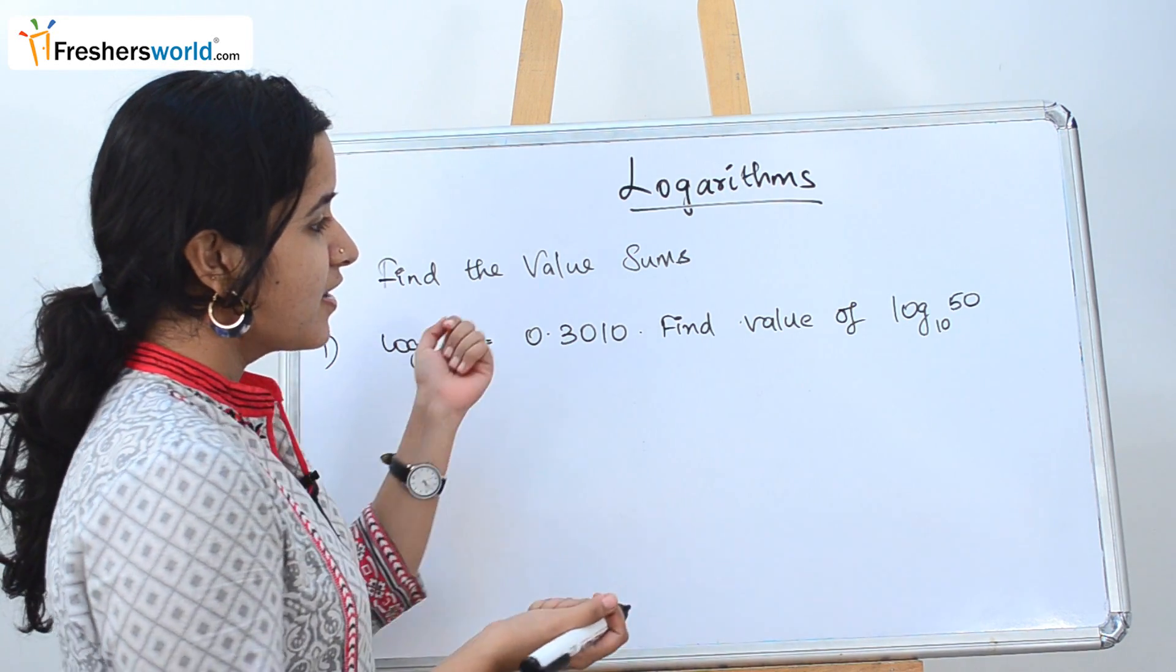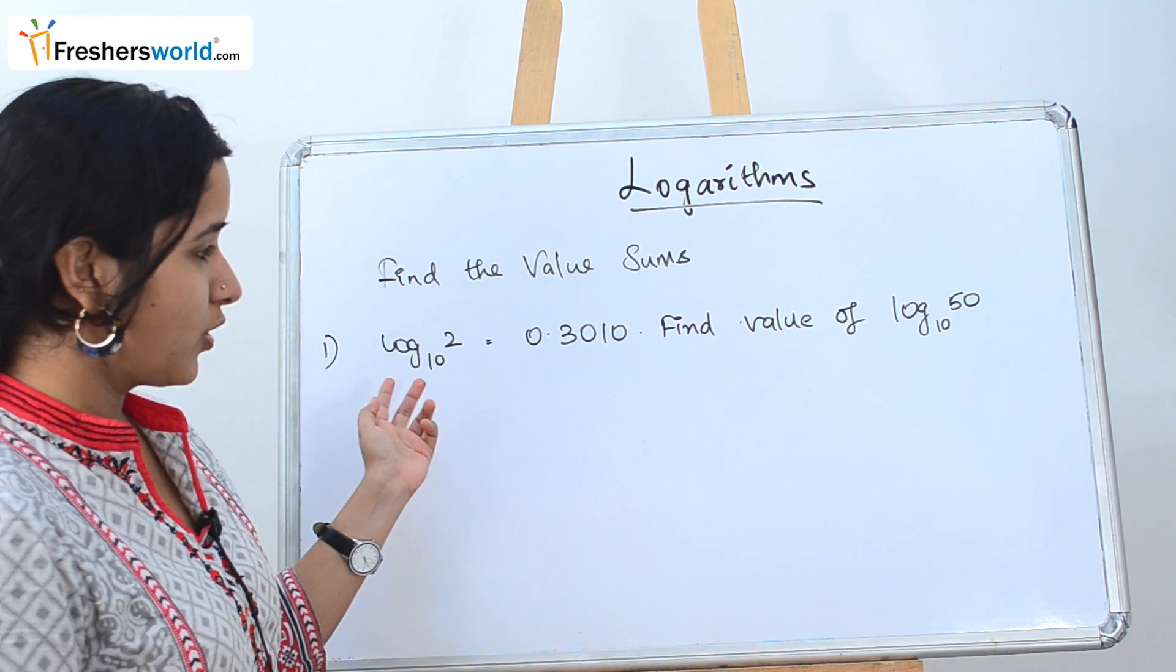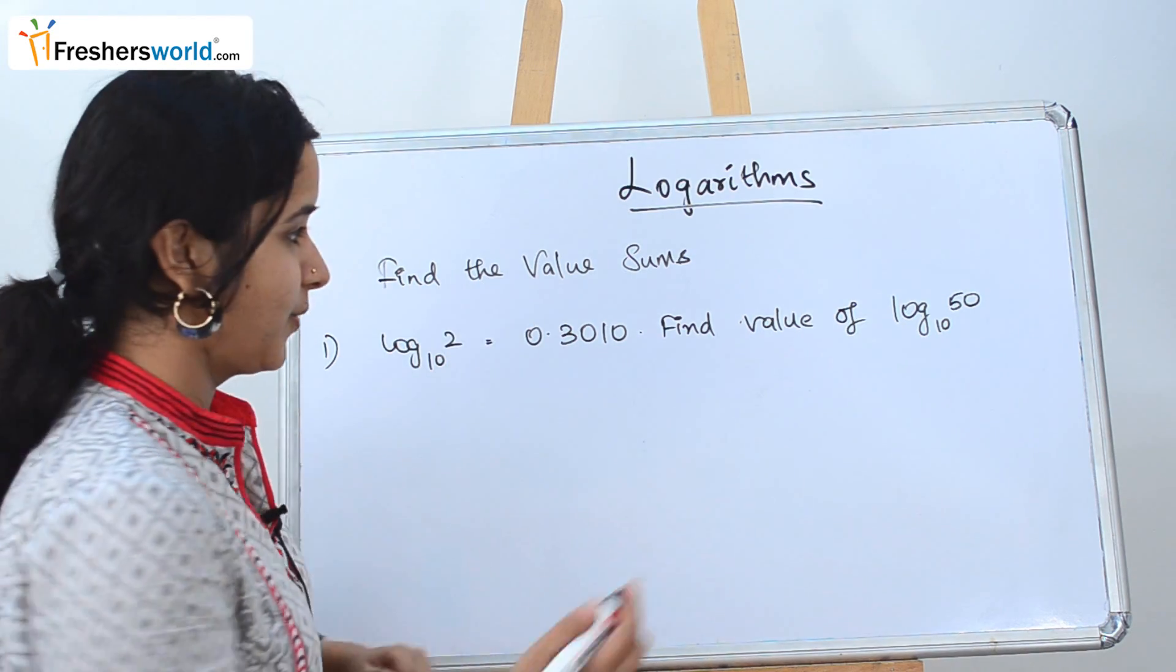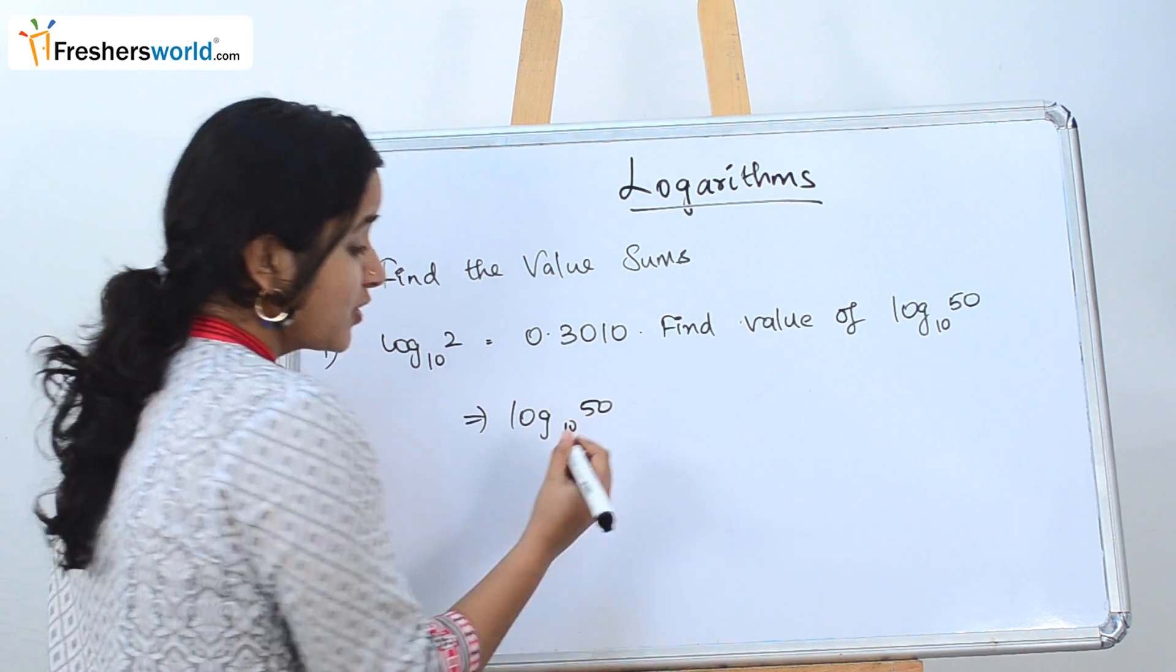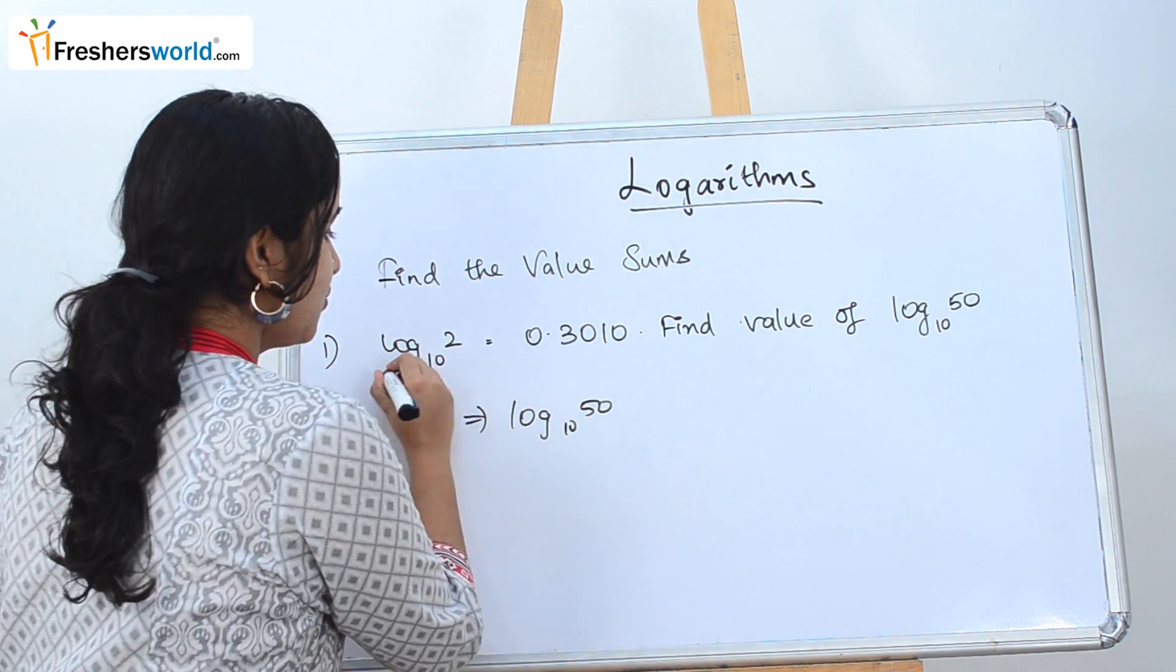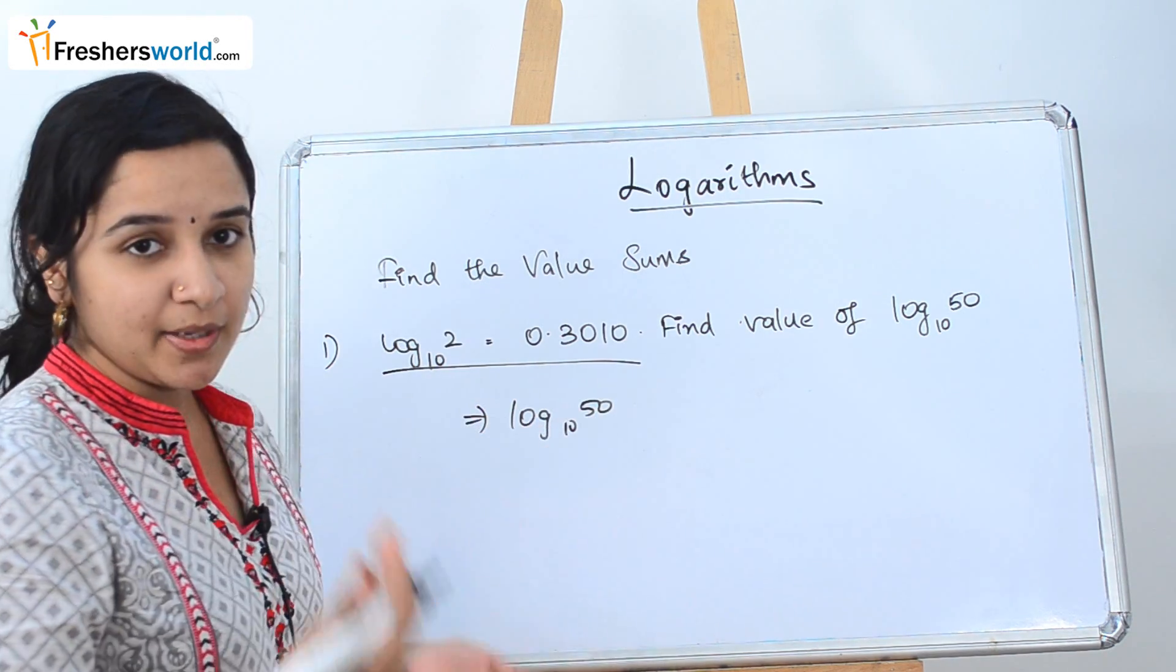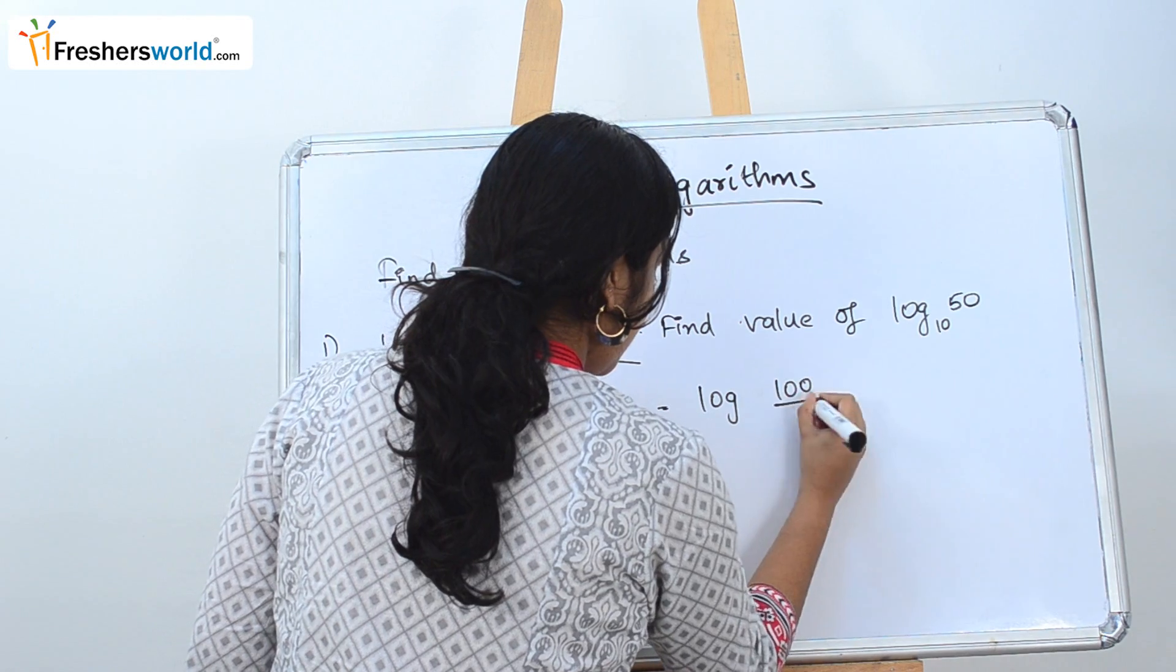The first question they have asked is find the value of log 50. They have given you the value of log 2 which is 0.3010. So let's write the question: log 50 base 10. This has to be rewritten in such a form that we have to use this value. So how can 50 be rewritten?